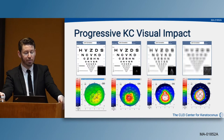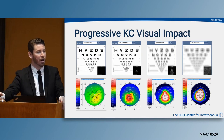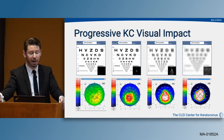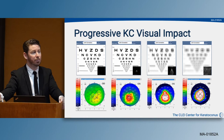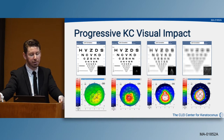We all know the progressive visual impact of keratoconus. These individuals shown here all have their lower-order aberrations corrected, but the impact is really in the amount of higher-order aberrations distorting the vision. As the disease gets more severe, so do the higher-order aberrations, causing more visual degradation.